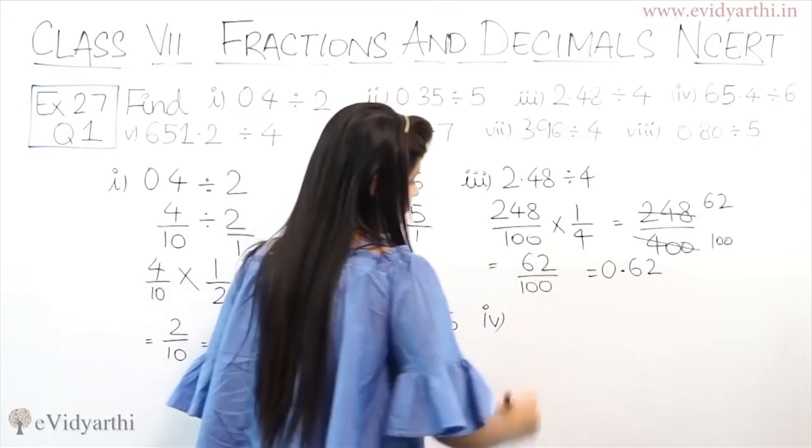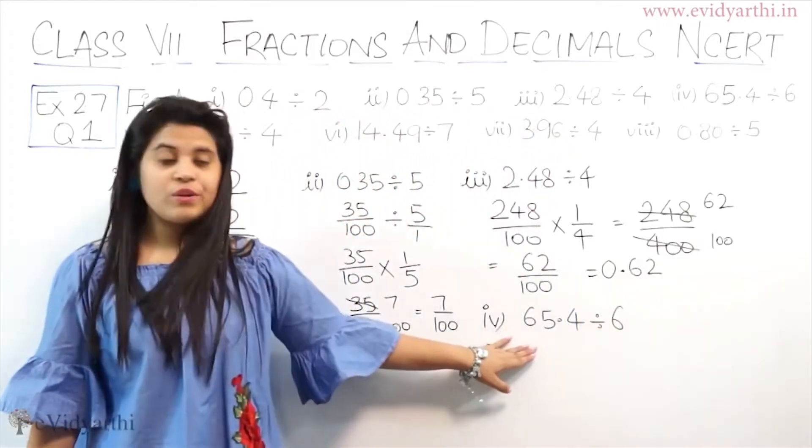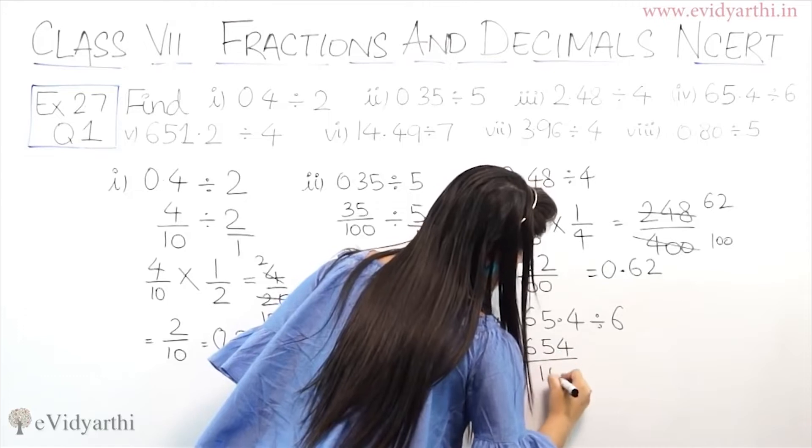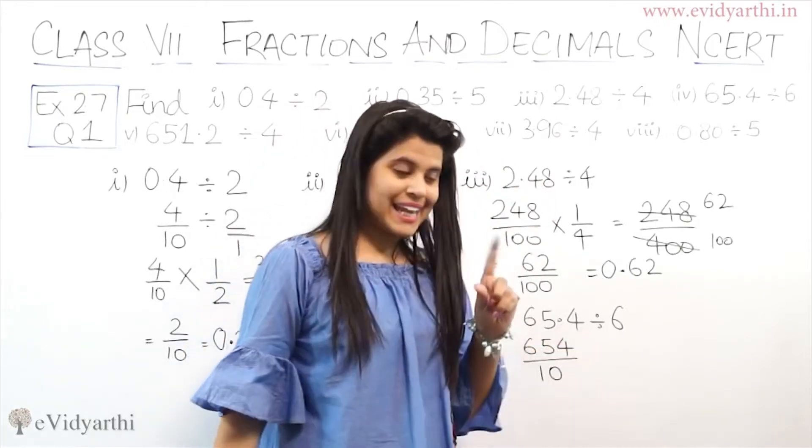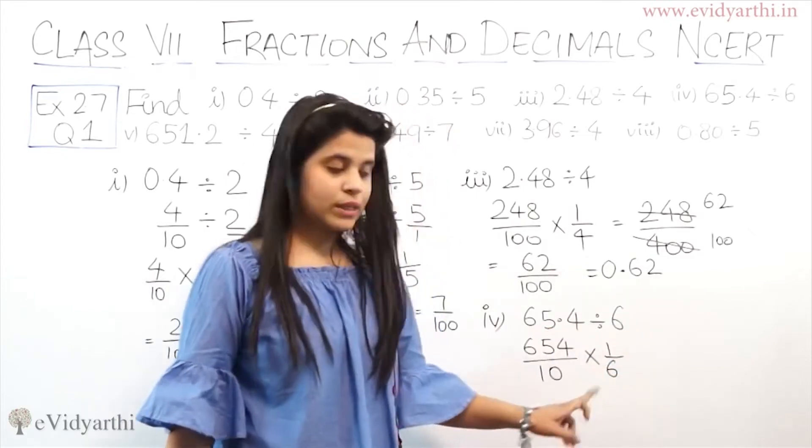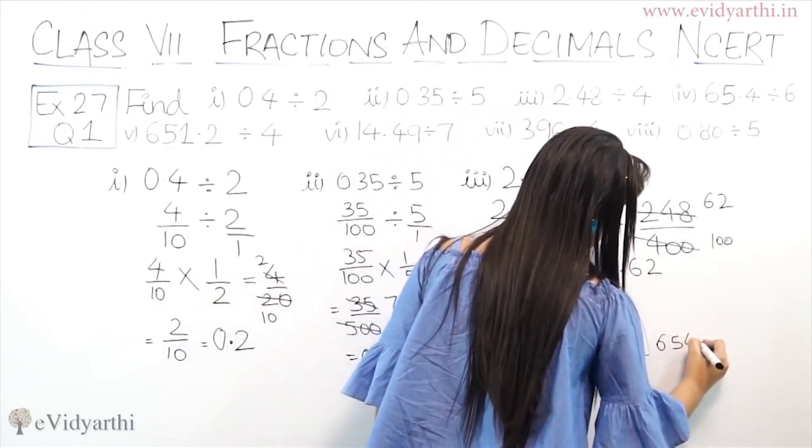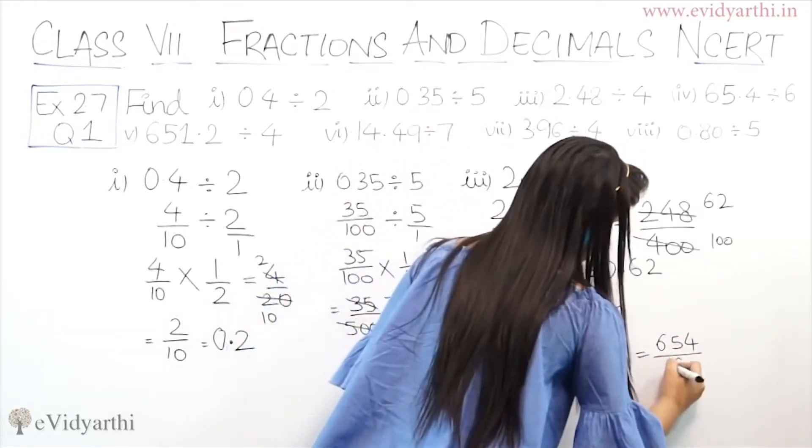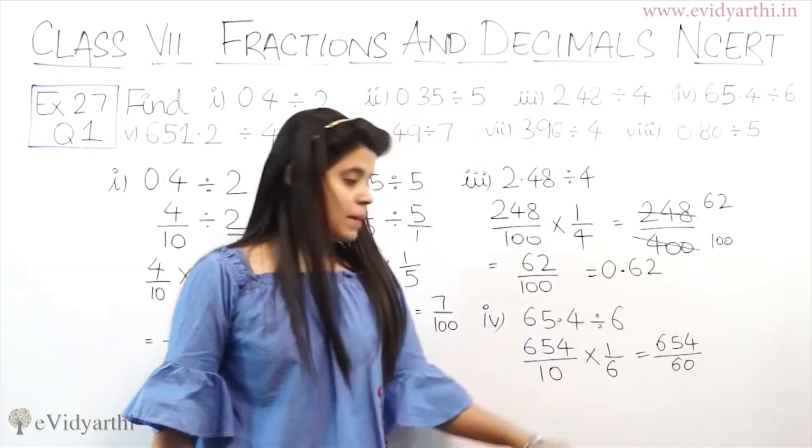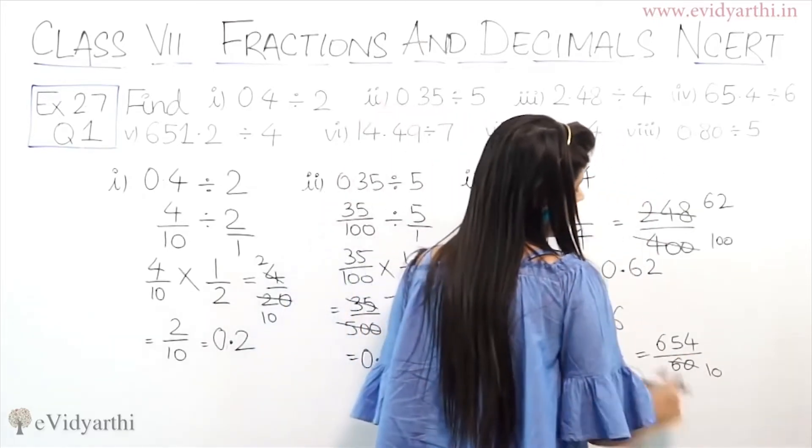Now let's go to fourth part. Fourth part is 65.4 divided by 6. Now 65.4 divided by 6. So first, we will do this. This will become 654 upon 10, upon 10. Why? Because decimal is one number. Multiply by 1 by 6. Now we have to multiply this, division becomes multiplication. And the last term is reciprocal. So this will give me 654 into 1 is 654 upon 60. So this is 654 upon 60. Now we have 60 to make 10. So I will cut 6 to 10. This will be 10 because 6 into 10 is 60.